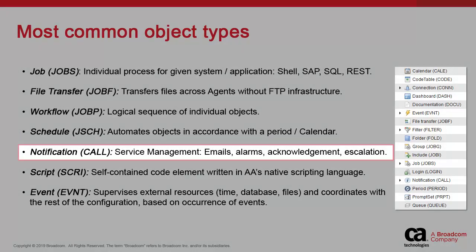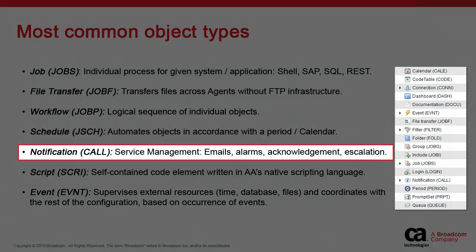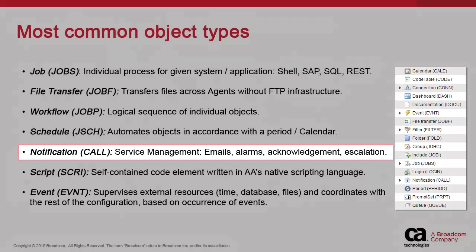The Notification is the core object type for service management in AA. It makes it possible to notify AA users and email recipients of certain events like job completion and failures, send requests to take ownership of a failed process, acknowledgments of a failure, and even escalation.